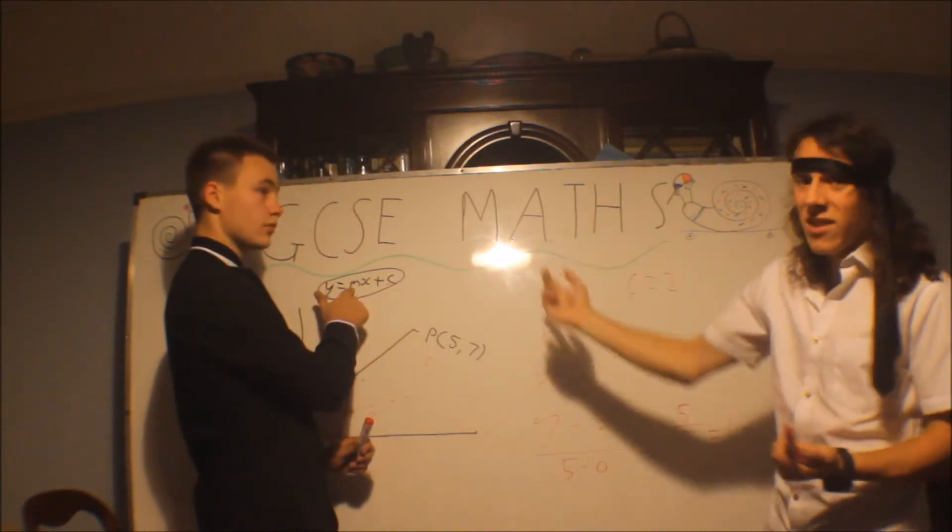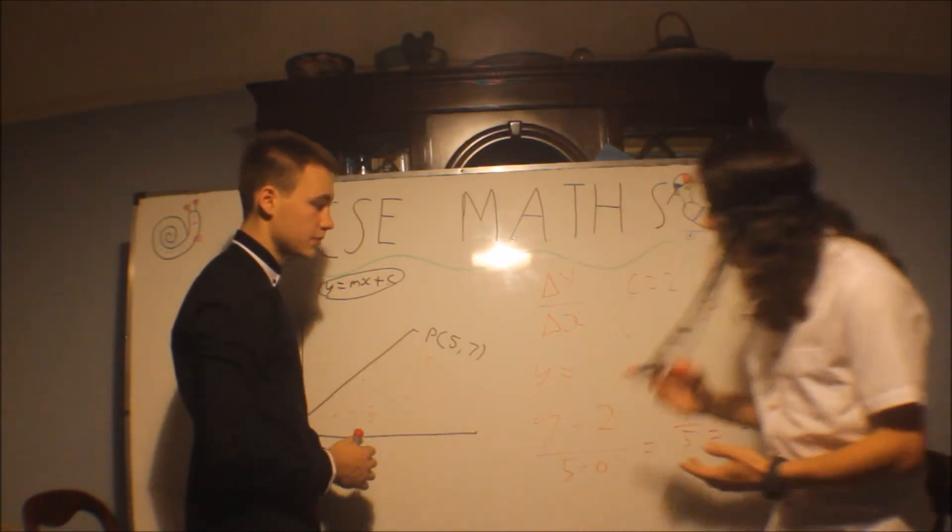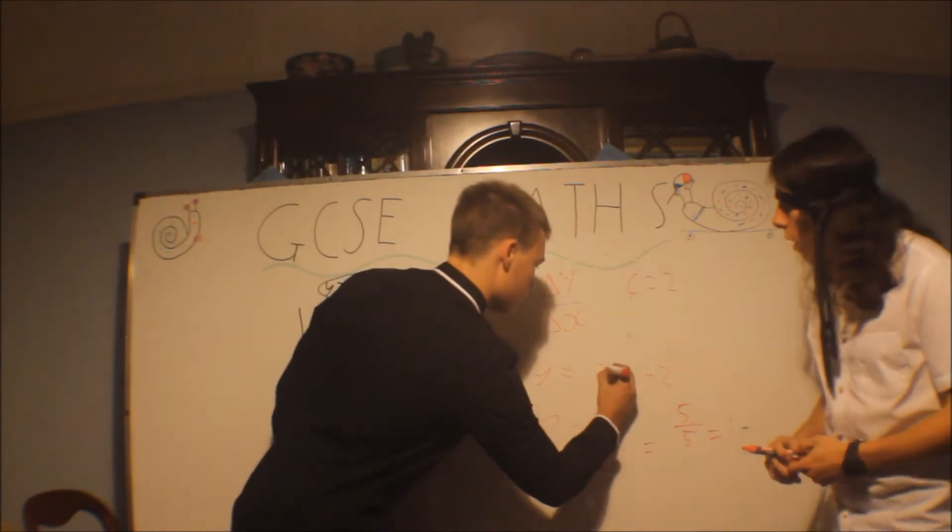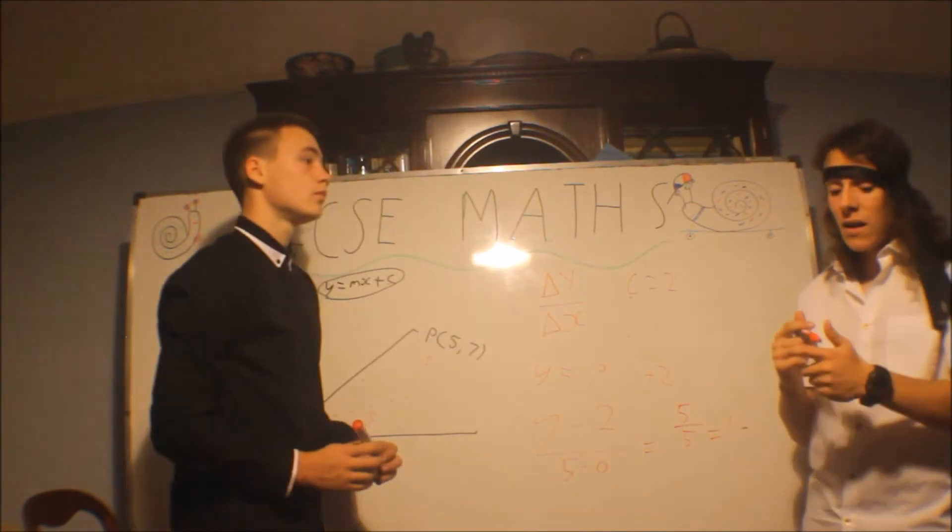Yes. Which means our m is 1, which means it's just x. Yes. So that means we actually know everything. So we have y equals x plus 2, and that's the equation.